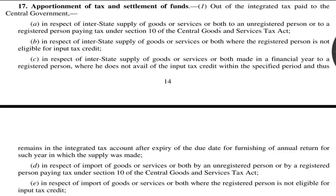Hello friends. Today in this video we shall discuss Section 17 of the IGST Act, which deals with apportionment of IGST and settlement of funds between the central government and state governments. Let's see what the section prescribes about it. It has five subsections.